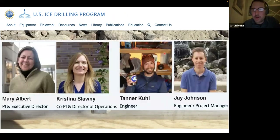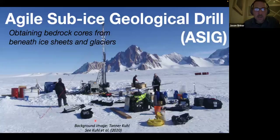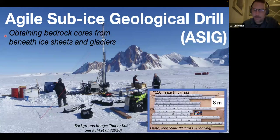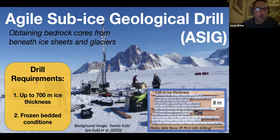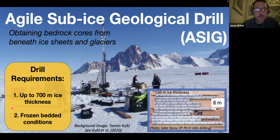We're working with the US Ice Drilling Program and using the Agile Sub-Ice Geological drill — the ASIG drill. It has obtained bedrock core from the West Antarctic Ice Sheet — through about 150 meters of ice thickness near the Pirrit Hills — getting an 8-meter-long bedrock core. The drill requirements are ice thinner than about 700 meters and frozen-bedded conditions, because you need a sealed hole from the ice down into the rock so you don't lose your drilling fluid.